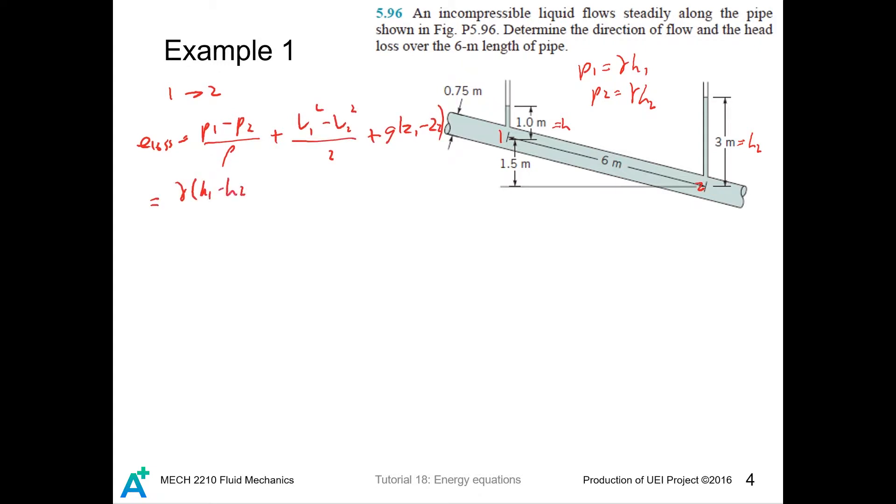And this term becomes about... this term we have to consider a1 v1 equals a2 v2, but now a1 equals a2 so this cancels out. So we must have v1 equals v2 and this term becomes zero.